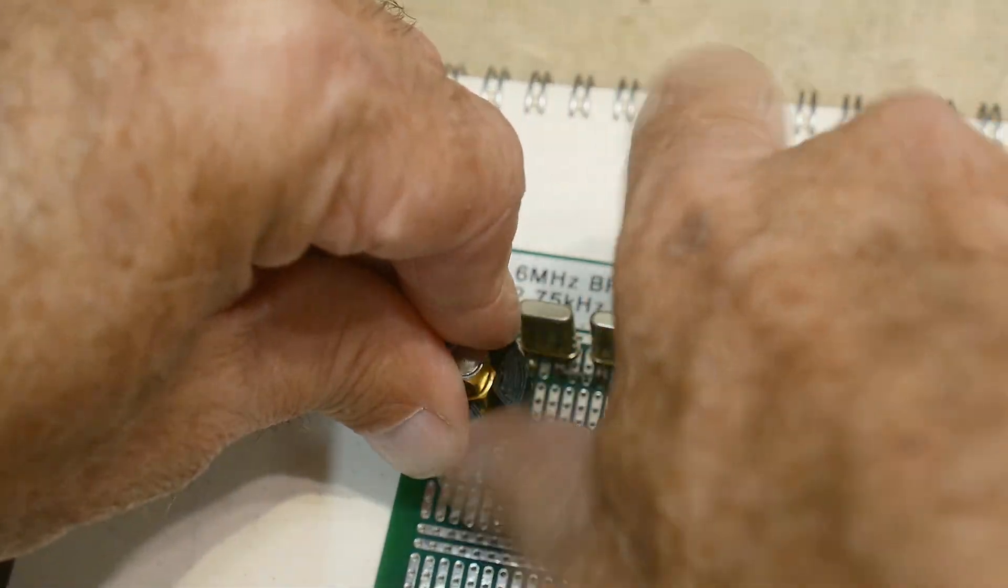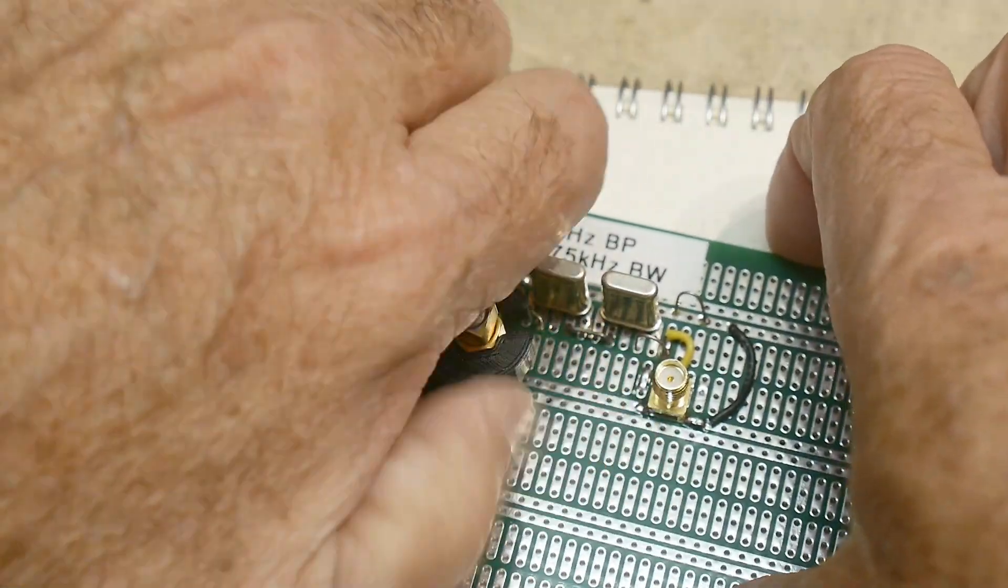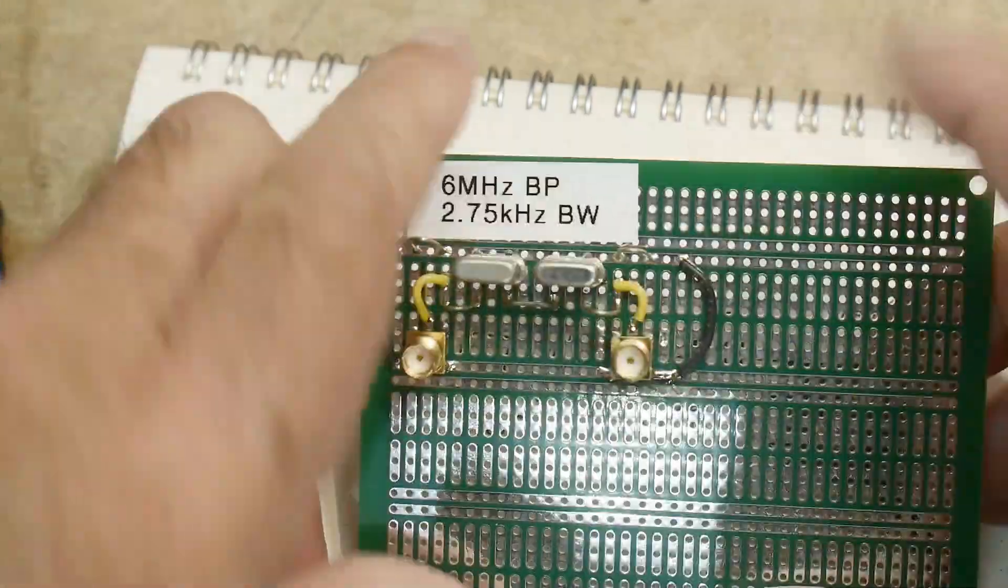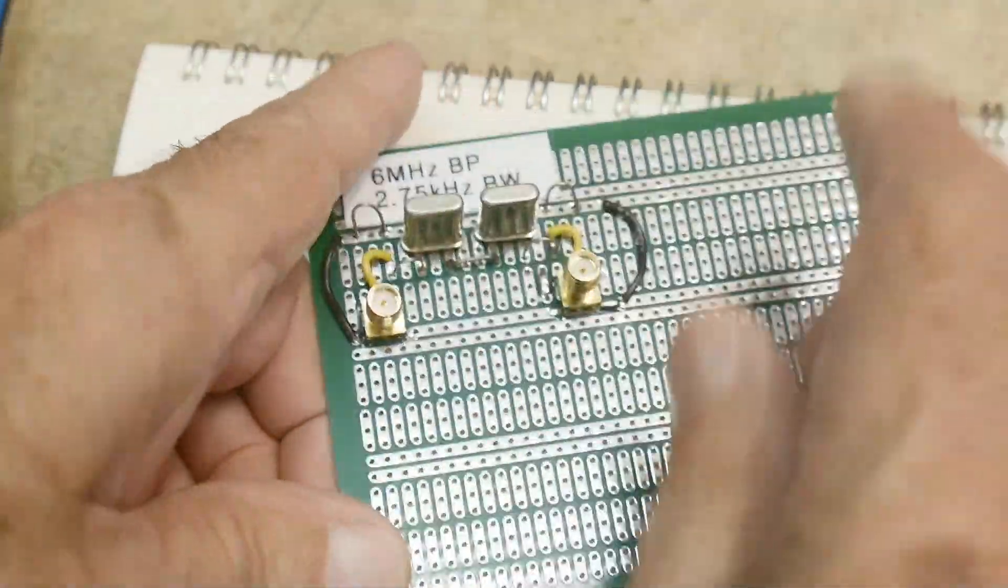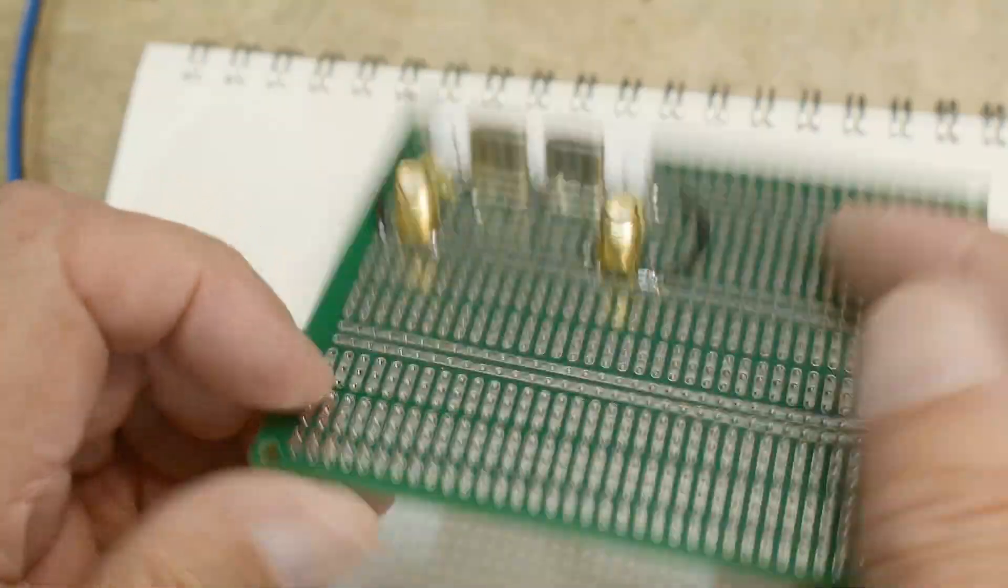These are nice crystals and nice capacitors and stuff. The 39 picofarads are actually COG. So yeah, should be a nice little thing to have in the drawer. And like I said, don't be afraid to build a whole bunch of these things and have them at your disposal.